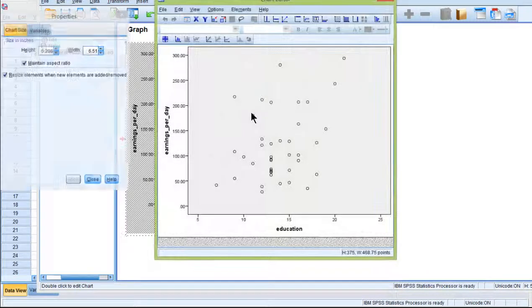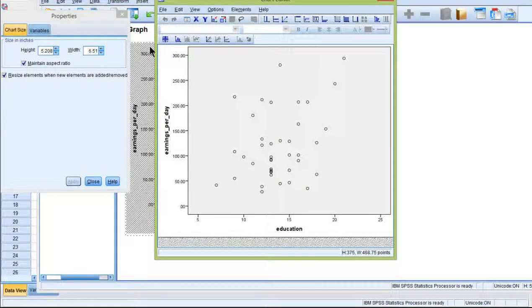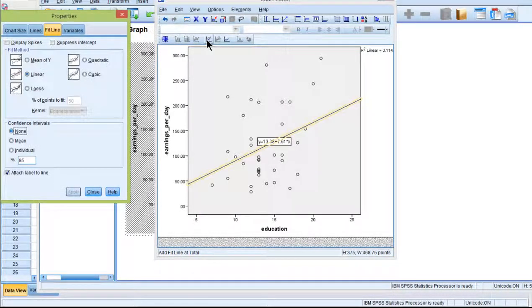And if I want to add the line of best fit, I've got to double-click on it, and then click on Add Fit Line at Total, and that is actually going to add the line of best fit.